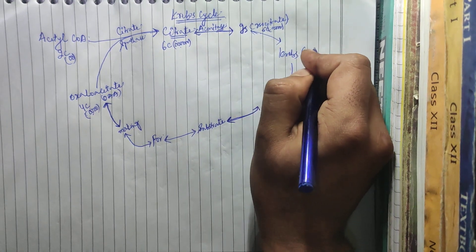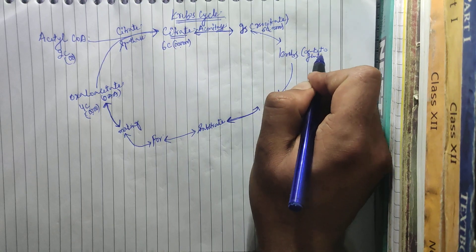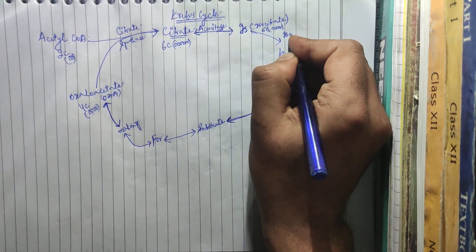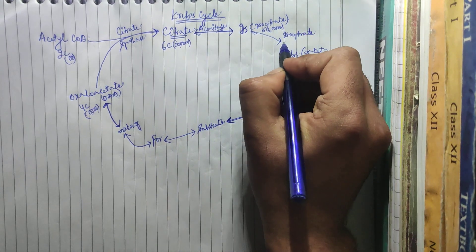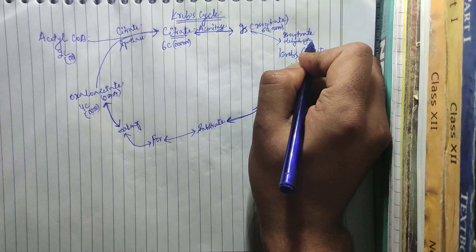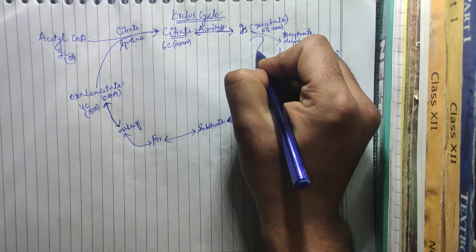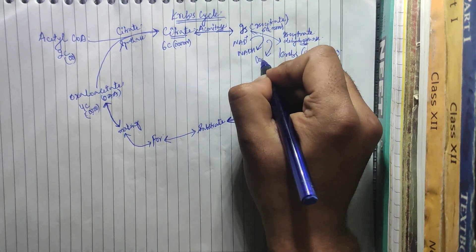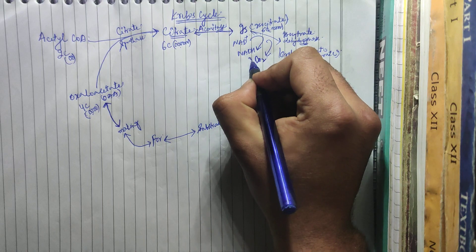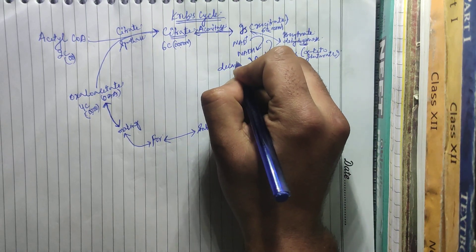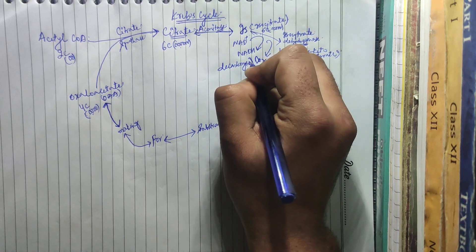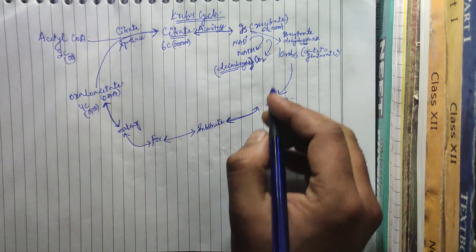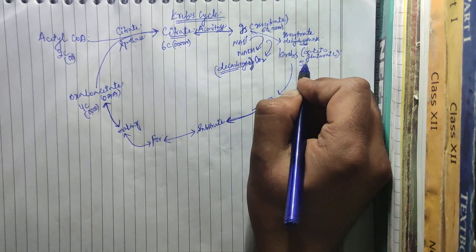Isocitrate gets converted into alpha-ketoglutarate in the presence of an enzyme, isocitrate dehydrogenase. Here, NAD⁺ gets converted into NADH, and carbon dioxide gets released. When there is release of carbon dioxide, this process is called decarboxylation. Alpha-ketoglutarate is a 5-carbon compound.